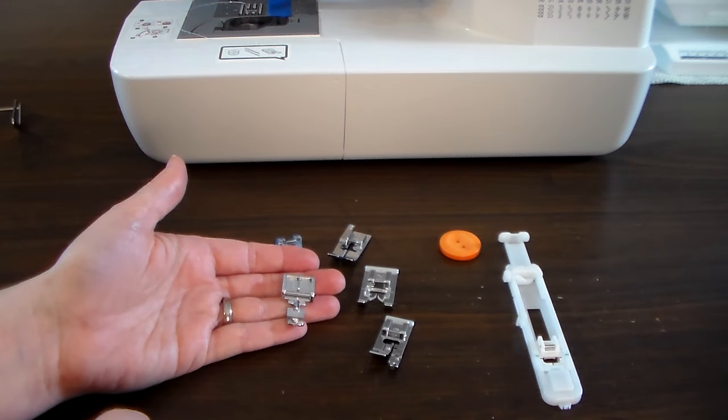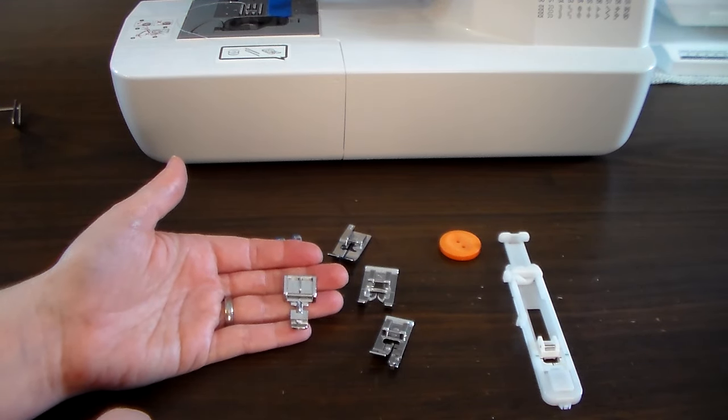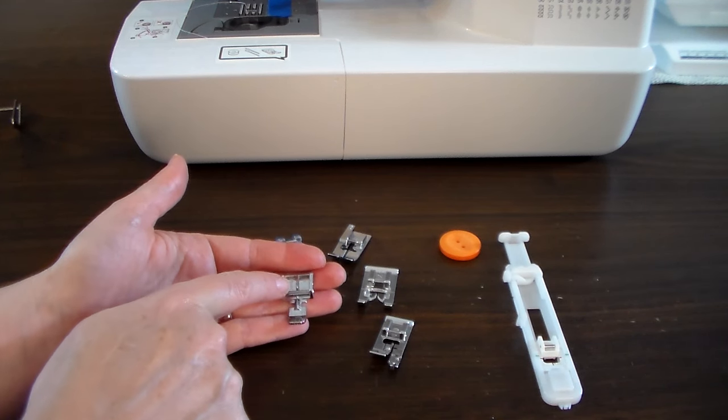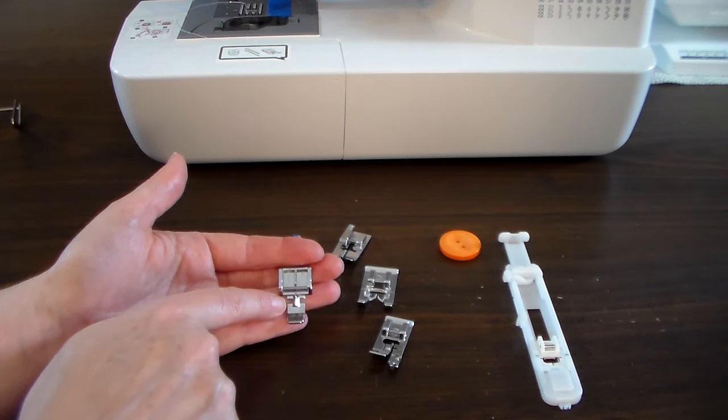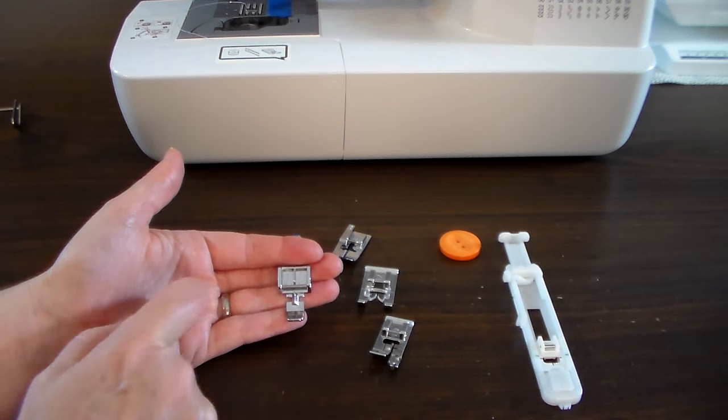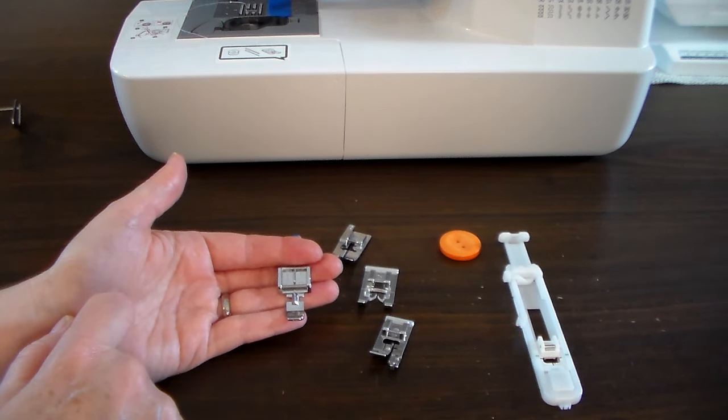Next is your zipper foot. This is the foot you'll use whenever you're sewing zippers onto a project. It'll attach on the left or the right, and you'll want to adjust your needle to come down on either the left or the right side.